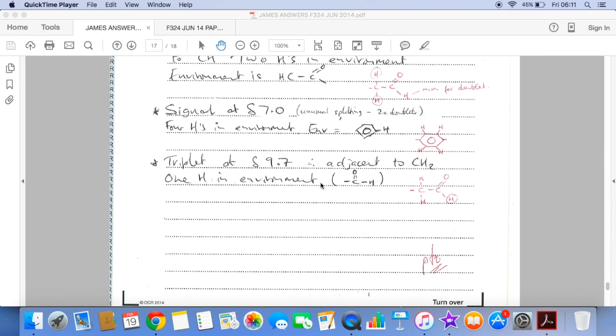And then the final peak at 9.7 is a triplet, so it's adjacent to a CH2 group. There's one hydrogen in the environment, and the 9.7 environment corresponds to an aldehyde, so it kind of backs up what we said there. And so you can see this hydrogen causes the environment, and it's coming out as a triplet, so it must be adjacent to a CH2 group, which again mirrors what we've said here.